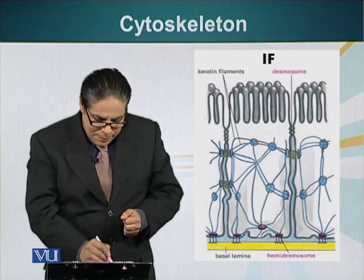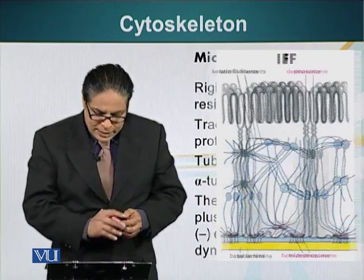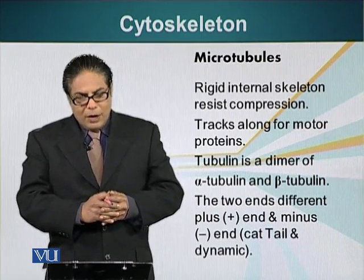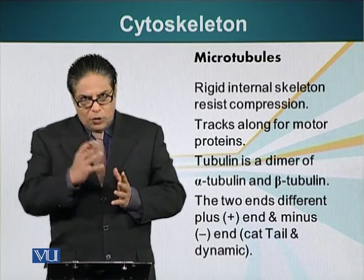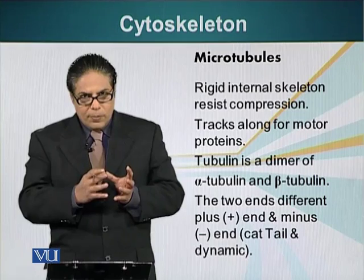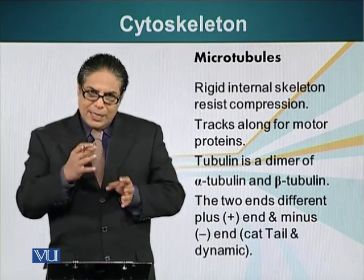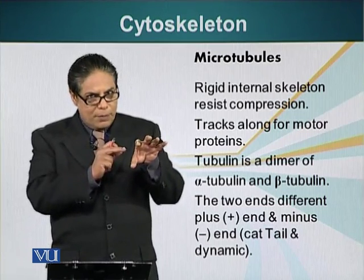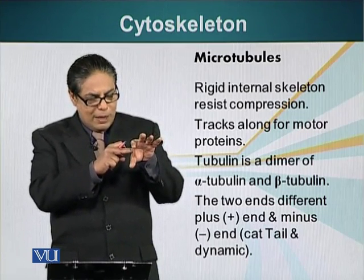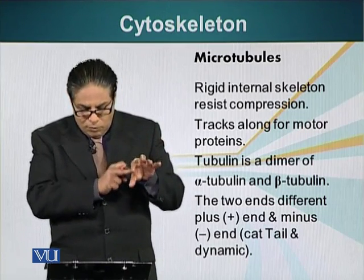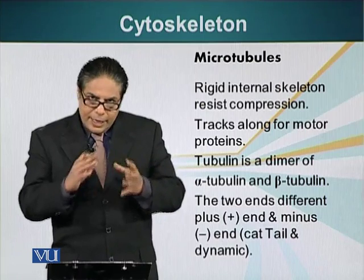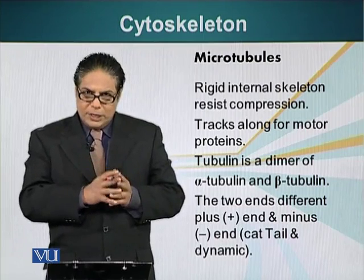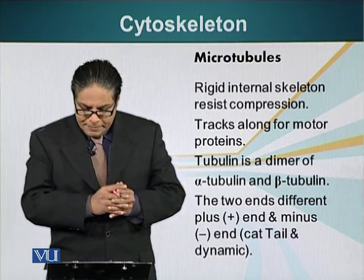Now let us look at the other type of cytoskeletal element: microtubules. Microtubules are rigid structures — as we saw in the animation, they are hollow, like hollow pipes — and they resist compression forces. Compression force is what happens if I press on my skin. These microtubules also serve as tracks along which motor proteins can move, and we will talk about that later.